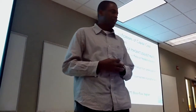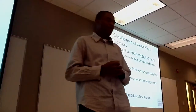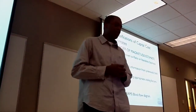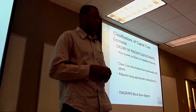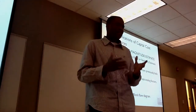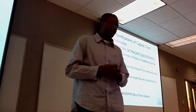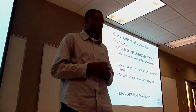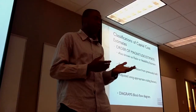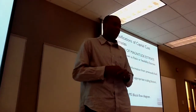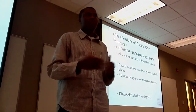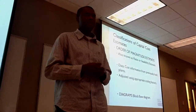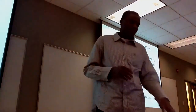In the classifications of the capital cost estimate, the first is the order of magnitude estimate. This is also known as a ratio or feasibility estimate. The data needed is cost information from previous projects, from previously built plants, and these data are adjusted to suit present-day reality. The diagram required is a block flow diagram.